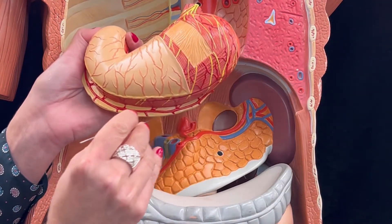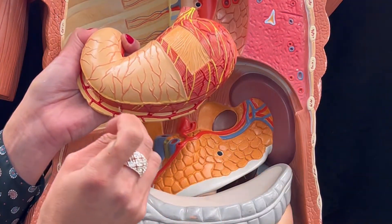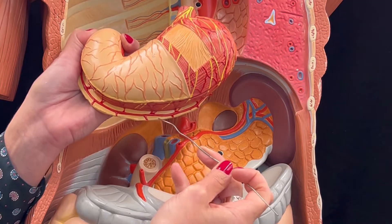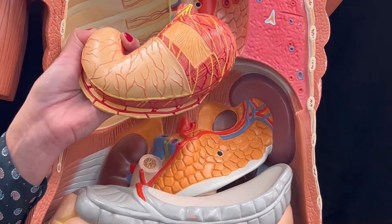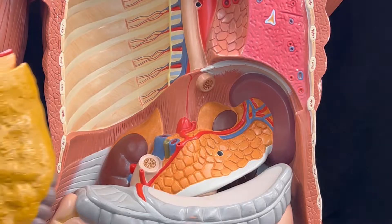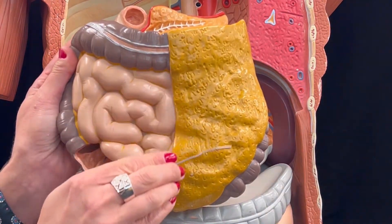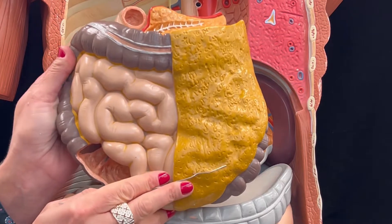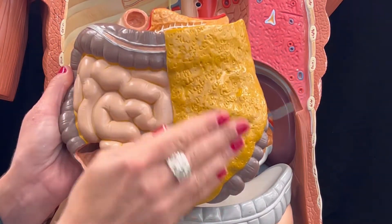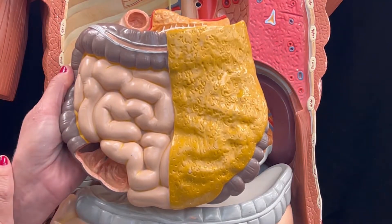Hanging down right here in the greater curvature of the stomach, we have the greater omentum. We can see the greater omentum better in this model. It's a fatty apron covering the intestines that you have underneath it.